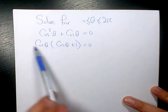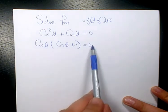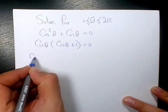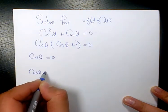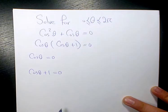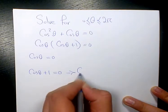Now we have two expressions multiplying each other equals 0. It means that either cosine theta is 0 or cosine theta plus 1 equals 0. Now we need to solve each of them separately.